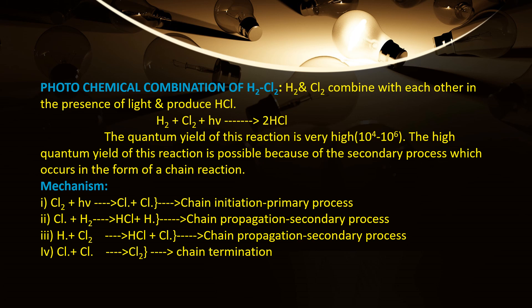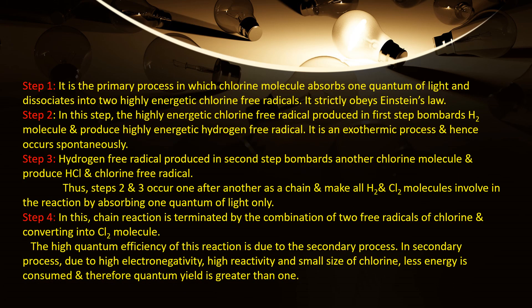The next step is the secondary process. The chlorine free radical reacts with a hydrogen molecule, forming HCl and giving rise to a hydrogen free radical. This is the secondary process, also called chain propagation. This hydrogen free radical then involves in another secondary process, also chain propagation, giving rise to further free radicals. Step four is the recombination of chlorine free radicals forming a chlorine molecule, called chain termination.